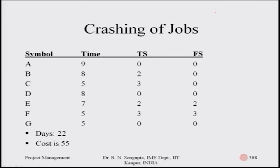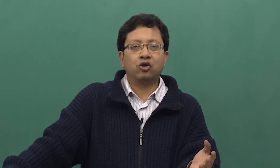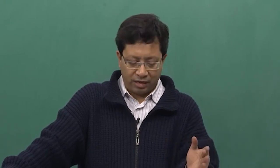Based on these calculations using the formulas for total slack and free slack, we redraw the table with the necessary information. The first column lists jobs A to G; the second column gives the normal time for each job — from A with a duration of nine to the last activity G with a duration of five. Total slacks are in the third column and free slacks in the fourth.